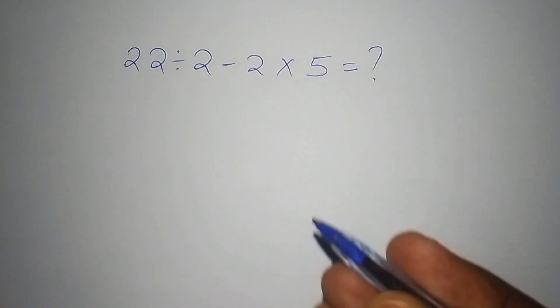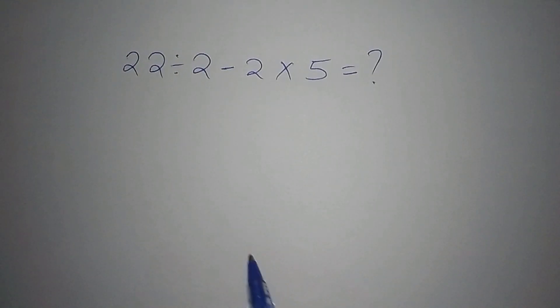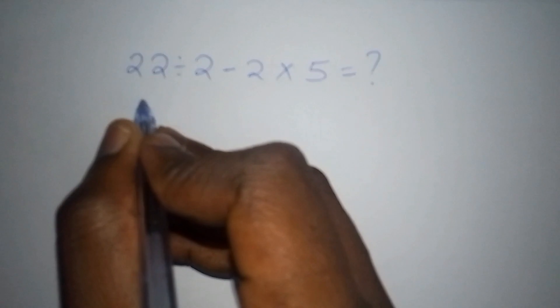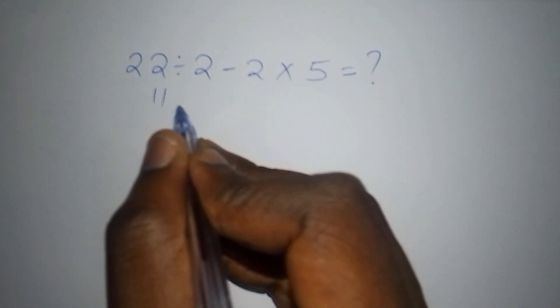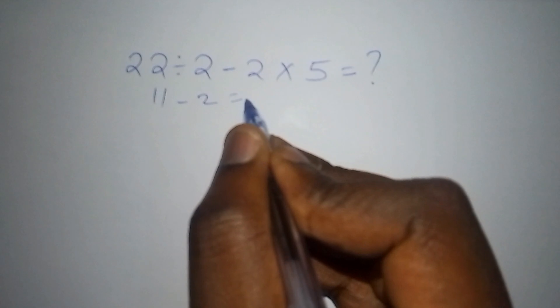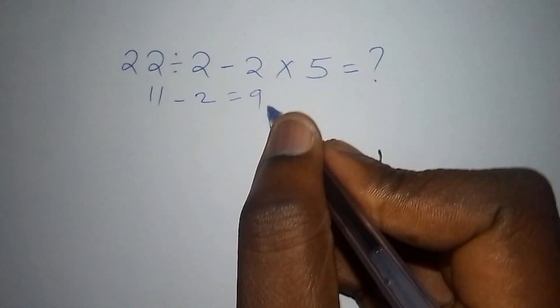Now a lot of us make this mistake of just working it out this way. They say 22 divided by 2, and this one is 11. Then 11 minus 2, and from 11 minus 2 they say the answer is 9.